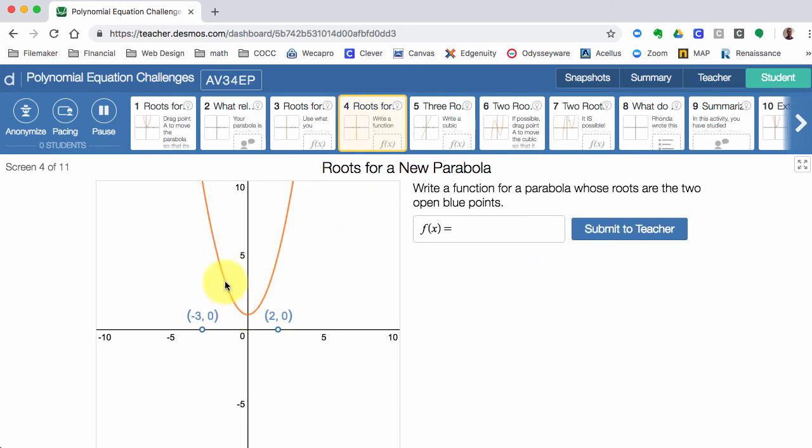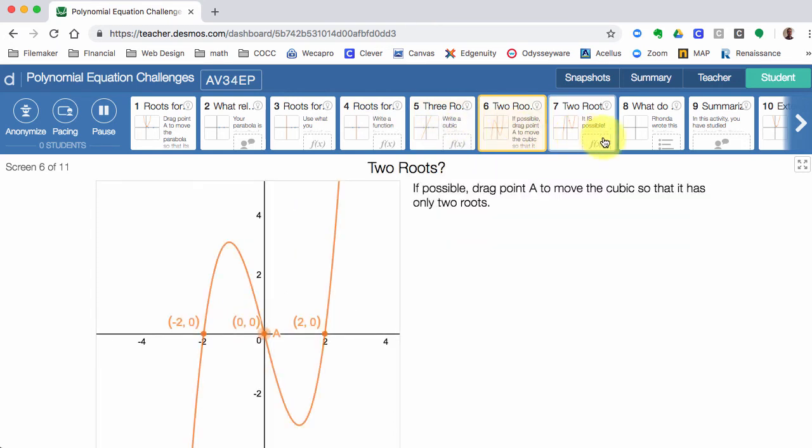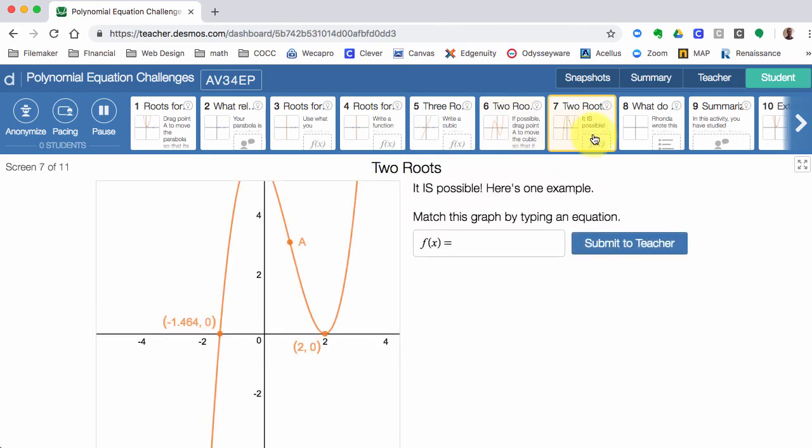I'm going to continue on with another quadratic equation with two roots, but then it's going to ramp up to three roots. Dragging, moving around and thinking about more and more polynomials. Here you go, two roots, is it possible? Here's one example. It is possible.